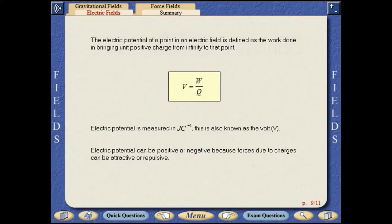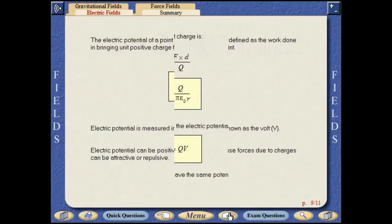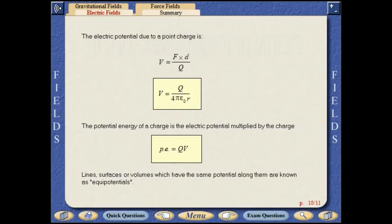Electric potential can be positive or negative because forces due to charges can be attractive or repulsive. Lines, surfaces or volumes which have the same potential along them are known as equipotentials.